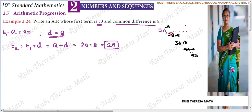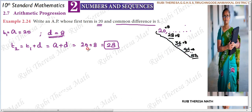The sequence is 20, 28, 36, 44, 52. This is the sequence. First term, second term, third term, fourth term - by adding 8, that is the common difference, to the previous term: 20 add 8 is 28, 28 add 8 is 36, 36 add 8 is 44.